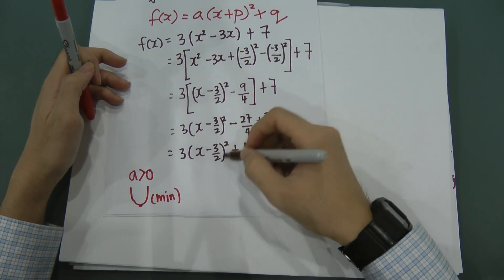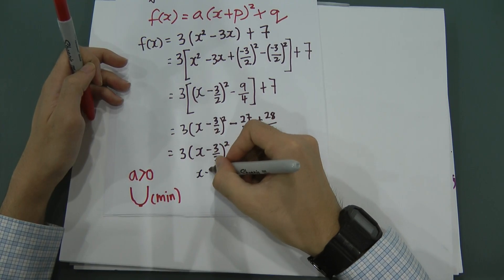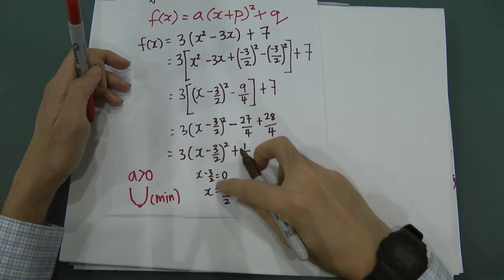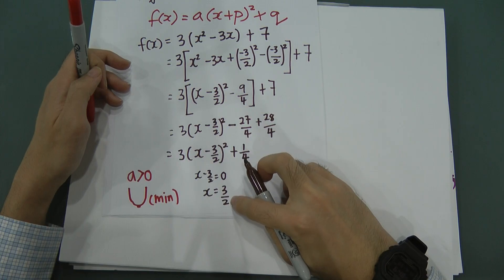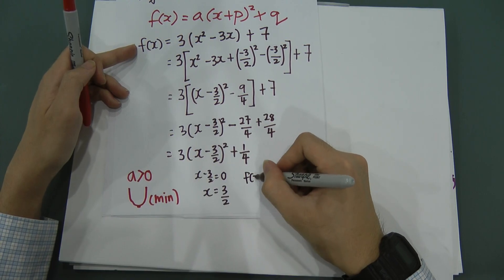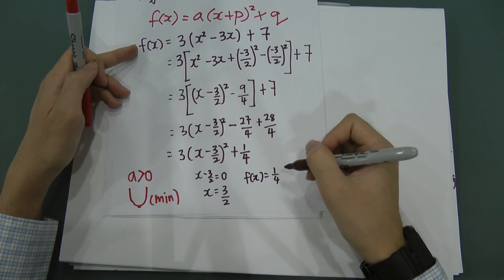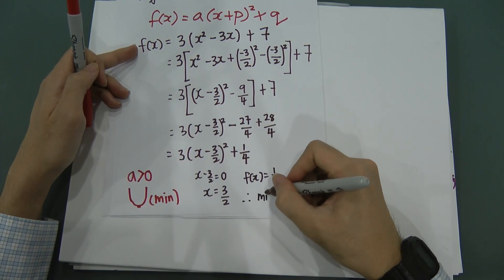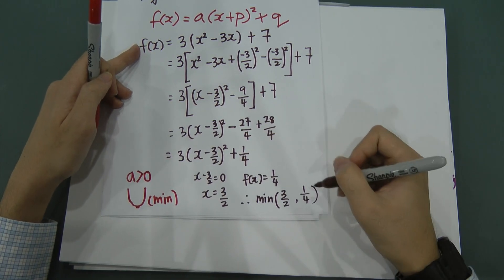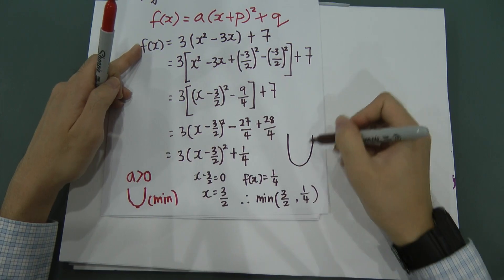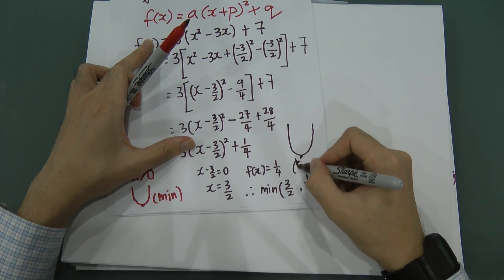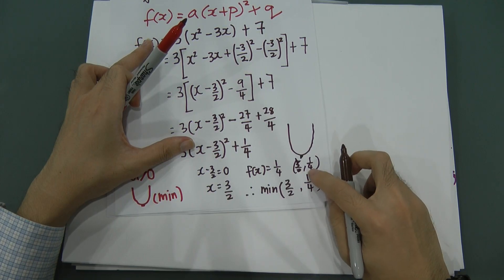To find the minimum point, set x - 3/2 = 0, which gives x = 3/2. This is the x-coordinate of the minimum point. The y-coordinate (f(x)) equals q = 1/4. Therefore the minimum coordinate is (3/2, 1/4).